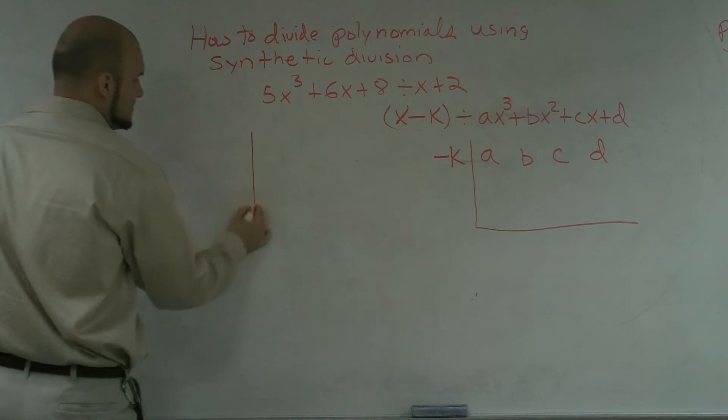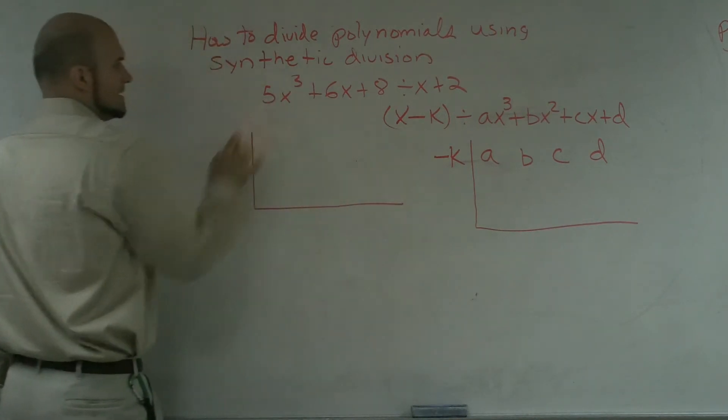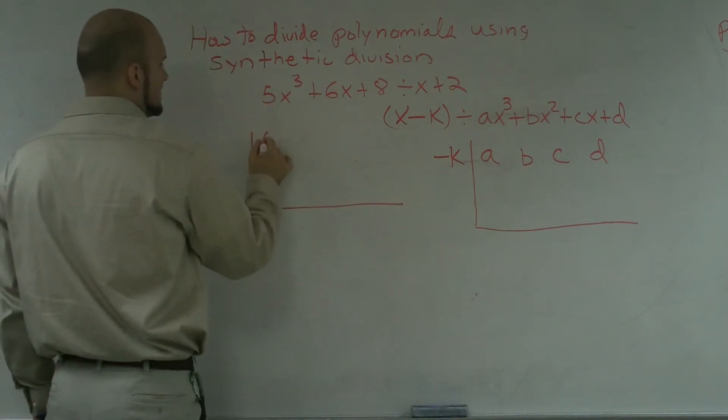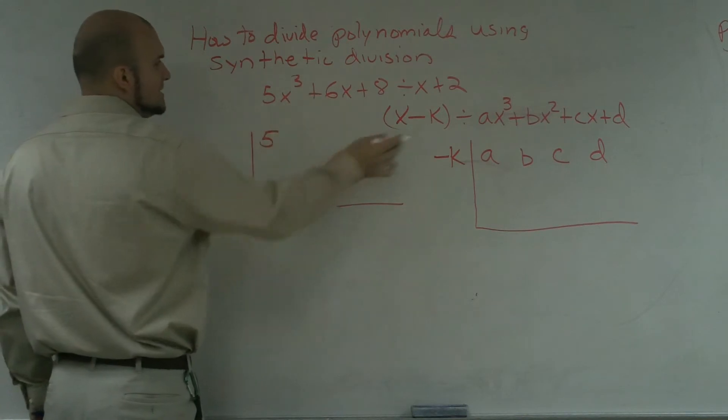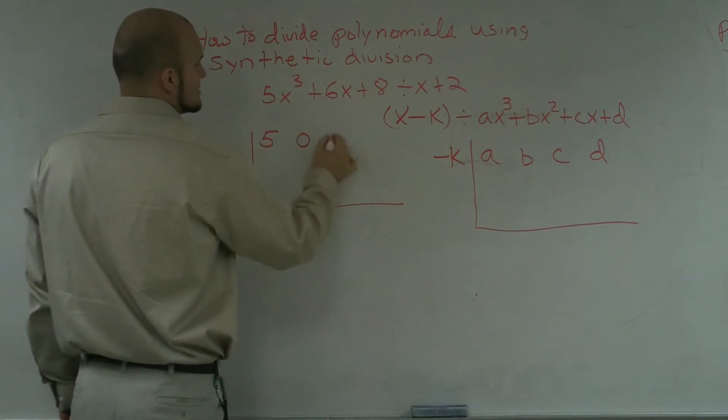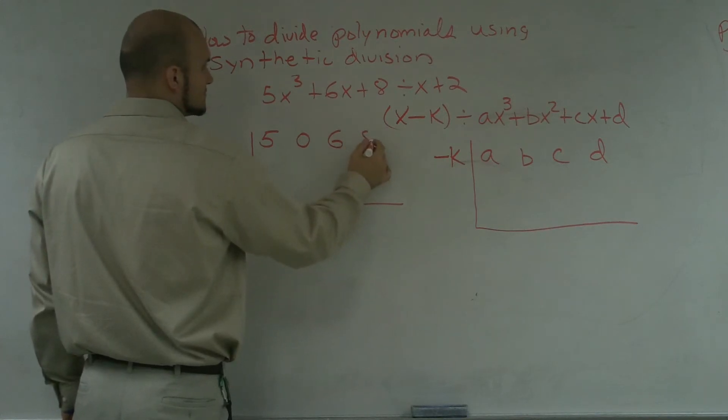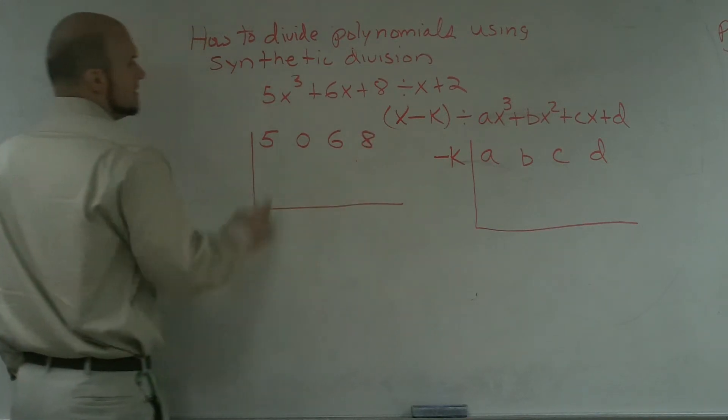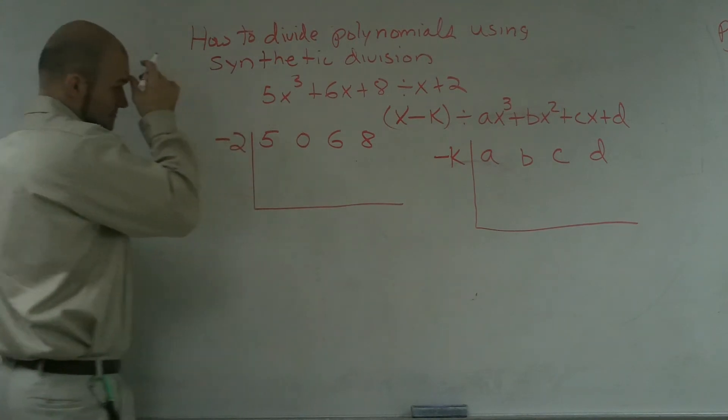So if I was going to do this problem, I'm going to take my coefficients, which I have 5. My b coefficient, I do not have a square, so that's going to be 0, 6, and 8. Then my k is going to be negative 2.